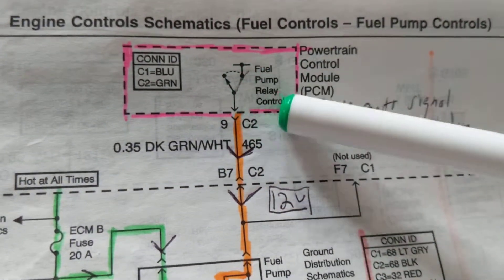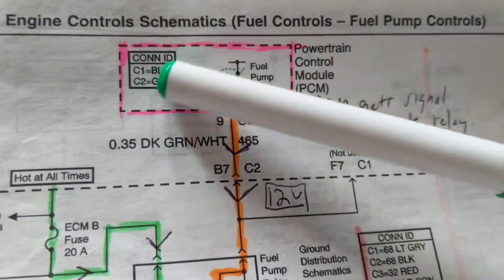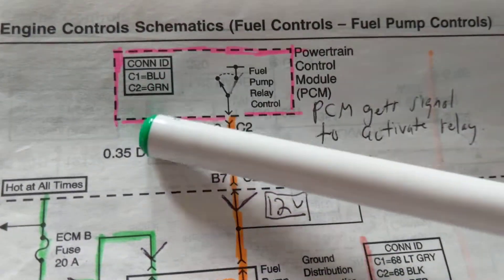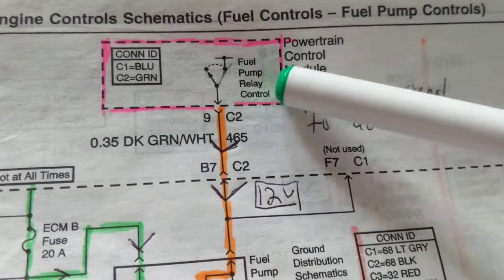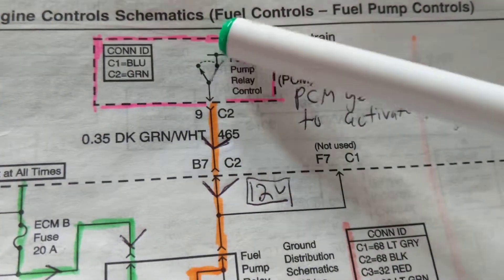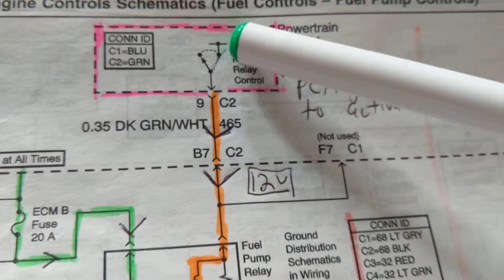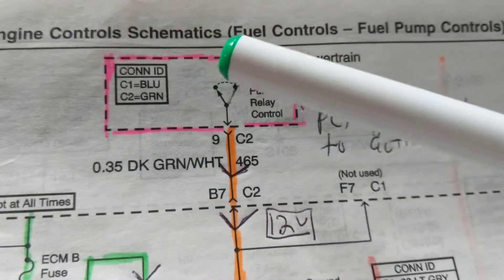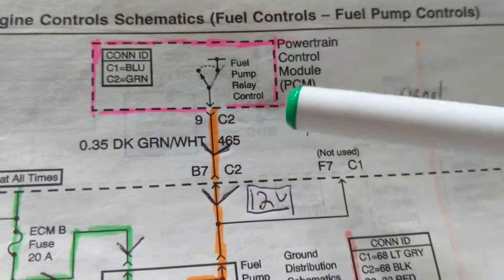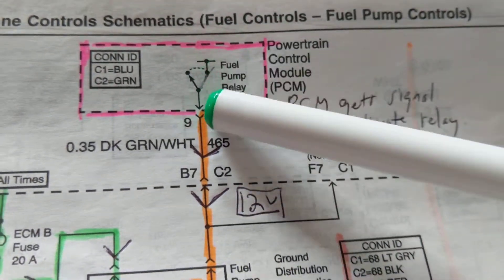Now this is a relay, the fuel pump relay control. Again, the dotted line denotes that this is part of the PCM. The PCM is the computer, the brain of the automotive. Therefore, when this switch is activated in this position, as you see right here, we have a complete circuit for current to flow. If this is only in this position, it's an open circuit. So when this is flipped, as the PCM flips it, therefore this from 12 volts...